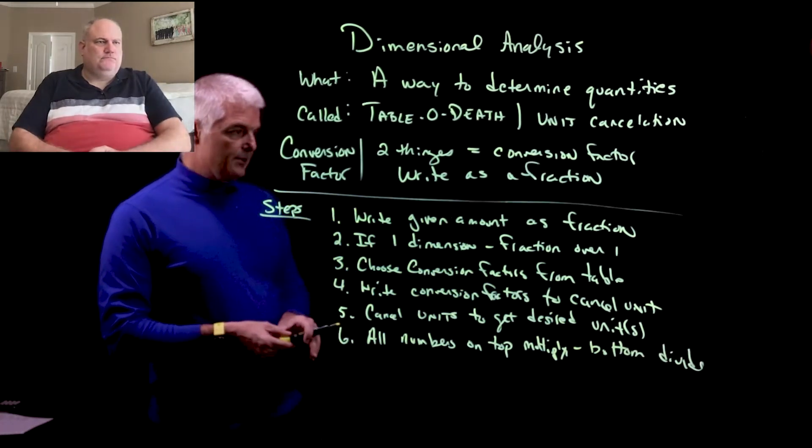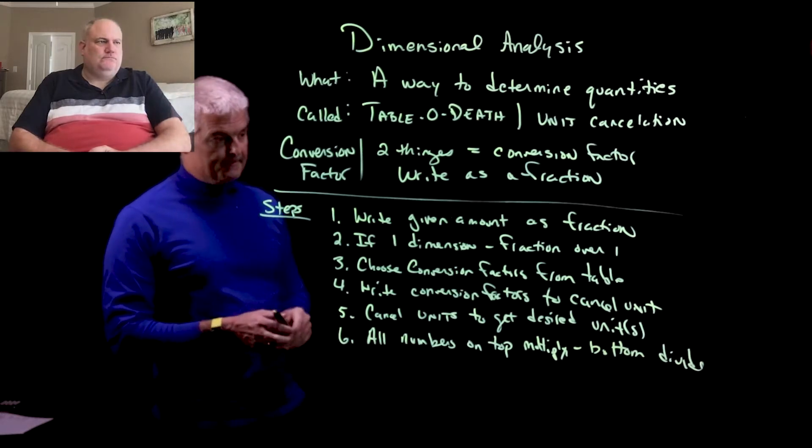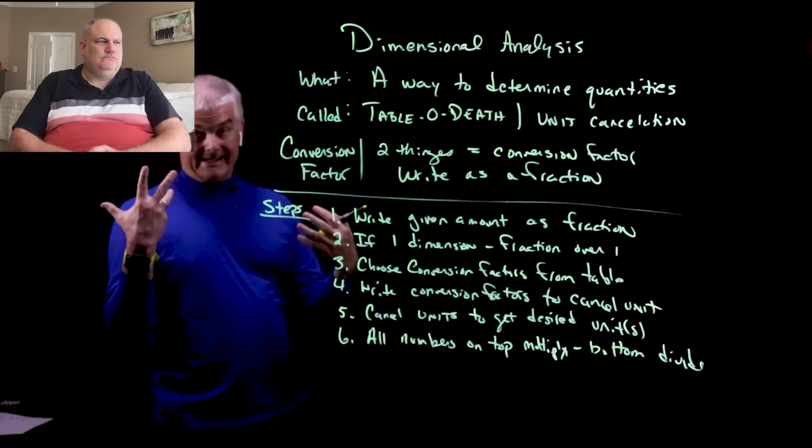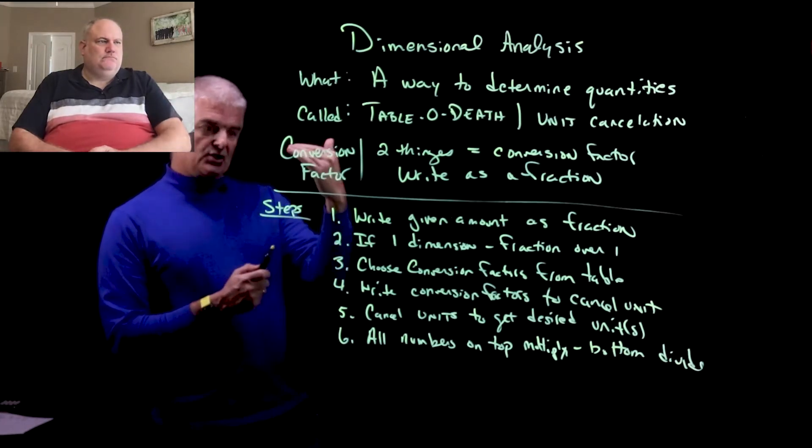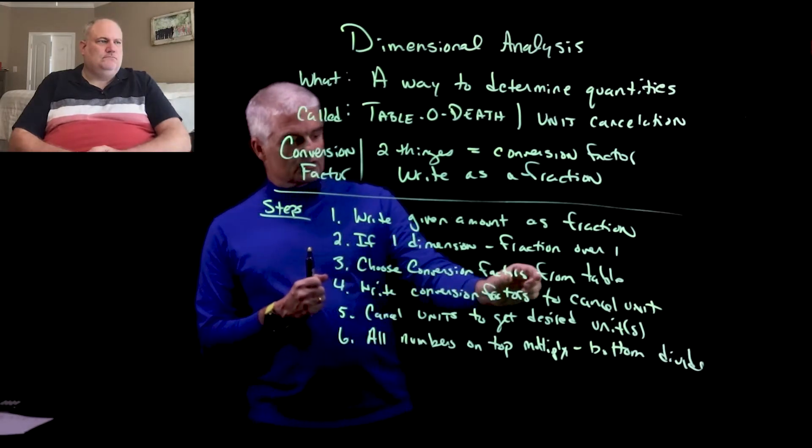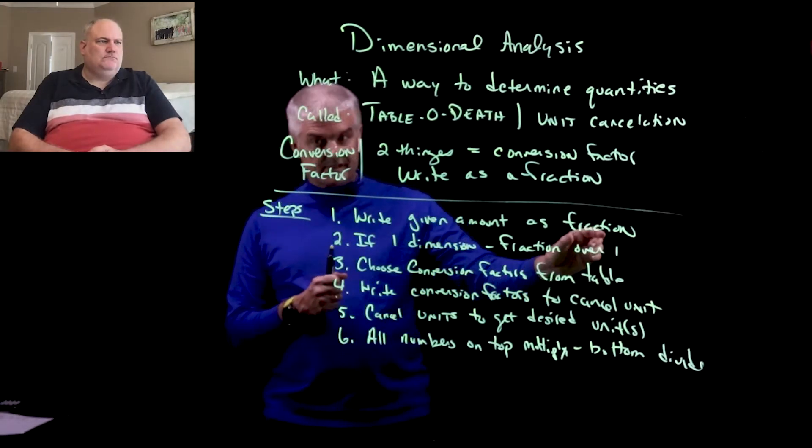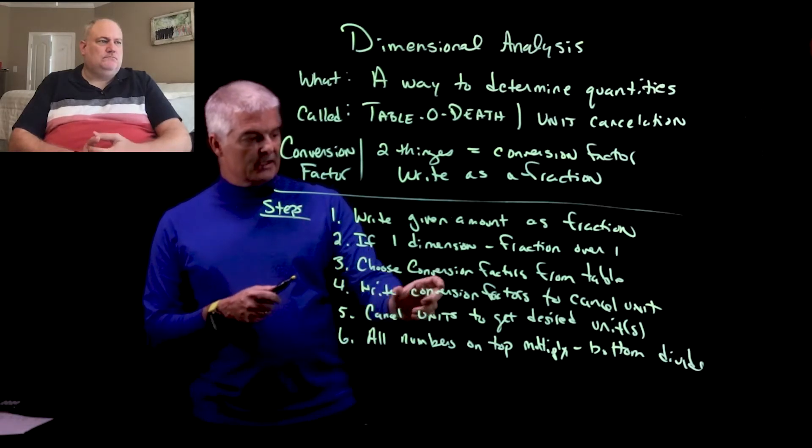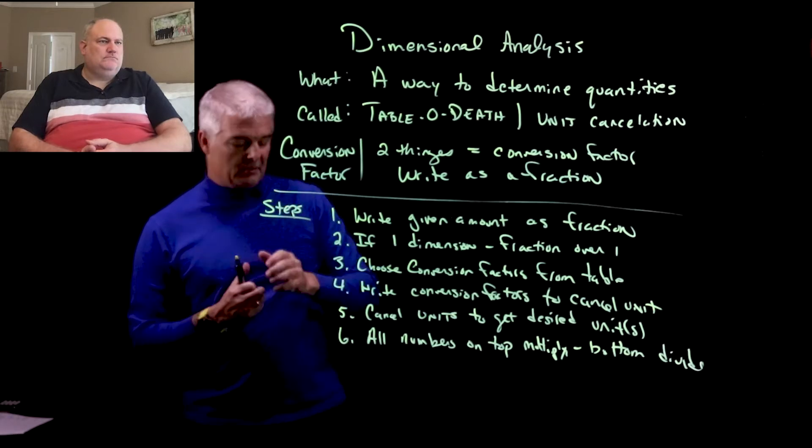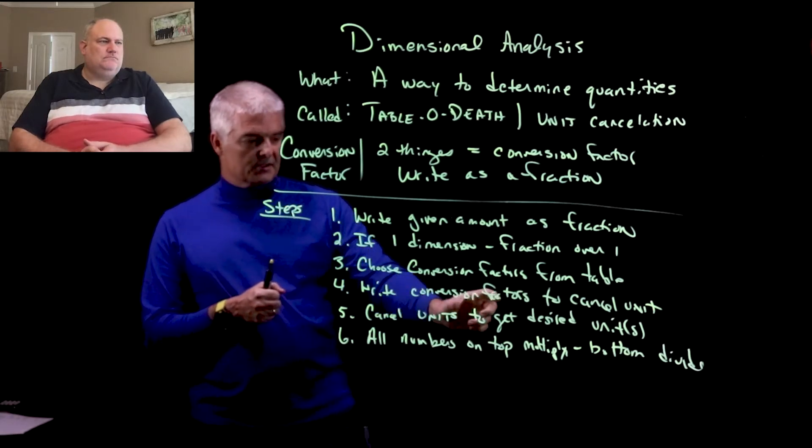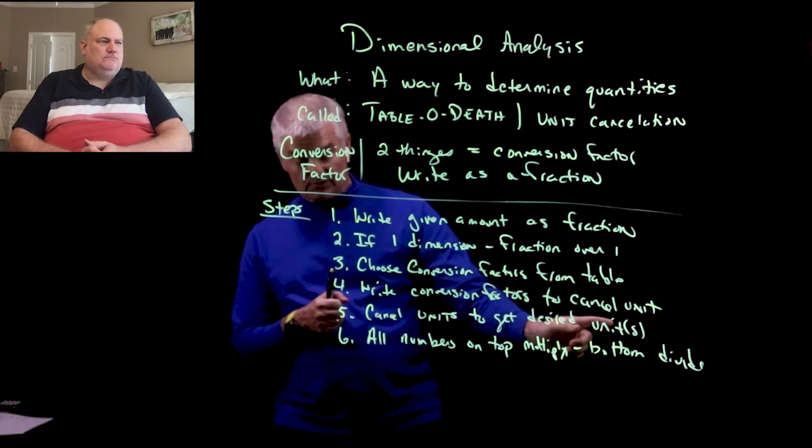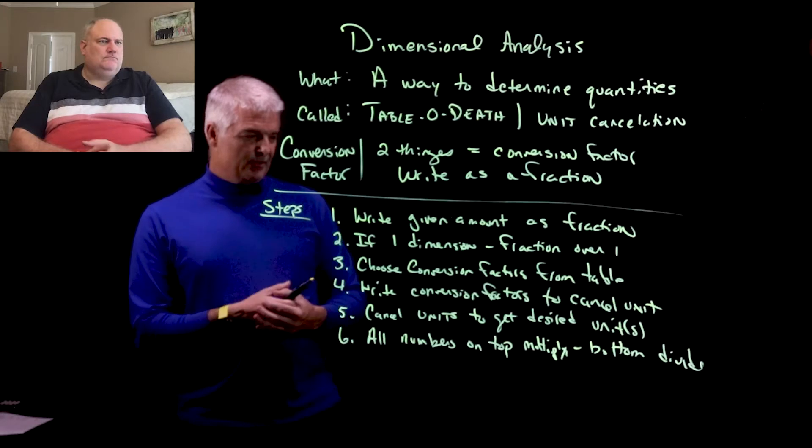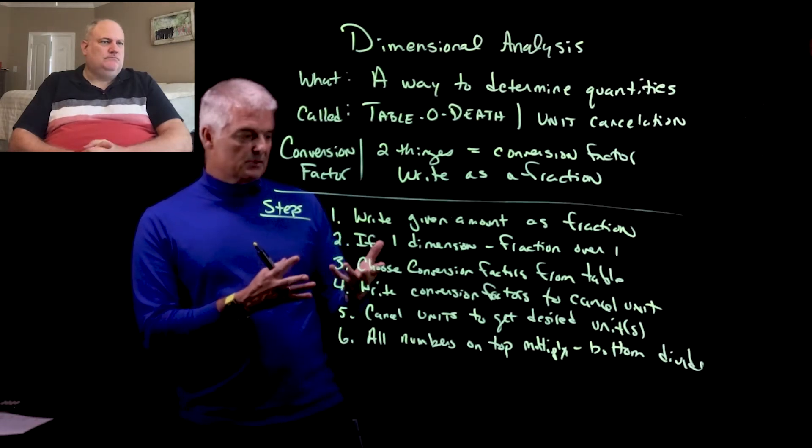So here we have them. You're going to write the given amount as fractions. And if there's only one dimension, like just one meter or 28.4 meters, you write it as a fraction over one. Then you choose your conversion factors from the table. You're going to write conversion factors in order to cancel the unit. So you're going to have to choose to flip them upside down or right side up. And you're going to cancel out the units until you get the desired unit or sometimes plural units. And lastly, all the numbers on the top, you multiply, and all the numbers on the bottom, you divide. This probably doesn't make a whole lot of sense until you really do some examples.